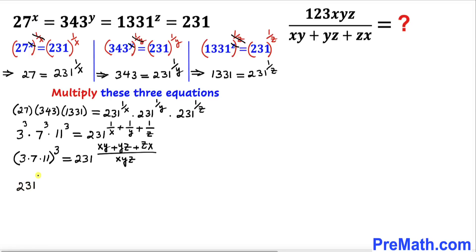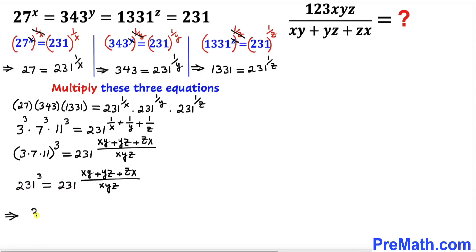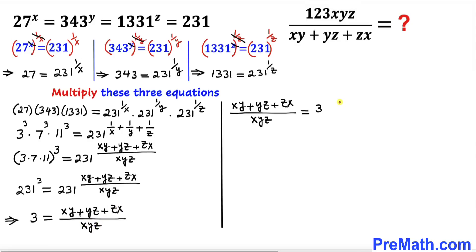Since 3 × 7 × 11 = 231, the left-hand side is 231³. With the same base on both sides, we equate the exponents: 3 = (xy + yz + zx) / xyz.